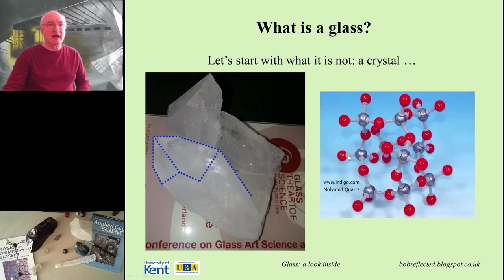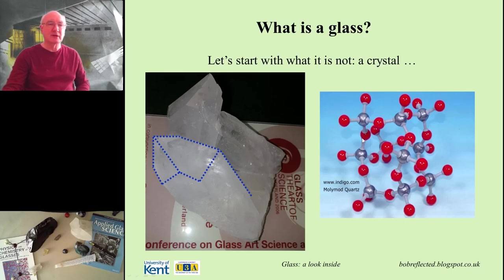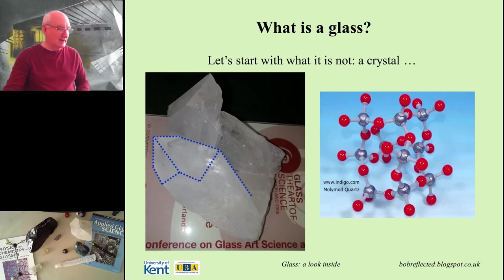The interesting thing to look at in this model is that of those four oxygens, two and only two actually get shared with another silicon atom. So these little tetrahedral shapes are linked through one or two of the oxygen atoms attached to the silicon in the middle, and this is enough to build up a three-dimensional arrangement of these basic tetrahedral shapes. I'm going to switch cameras now and we'll have a look at that in more detail.